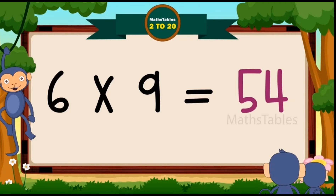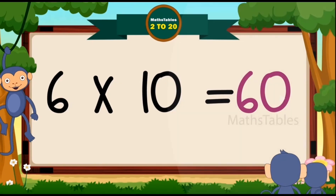Six nines are fifty-four. Six tens are sixty.